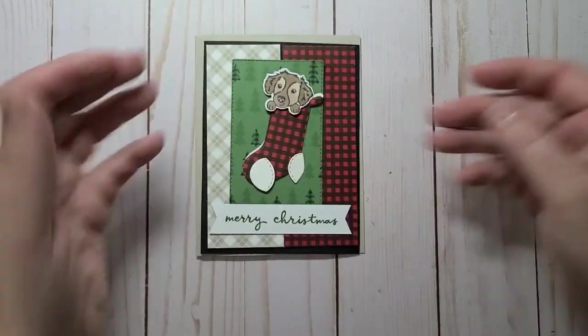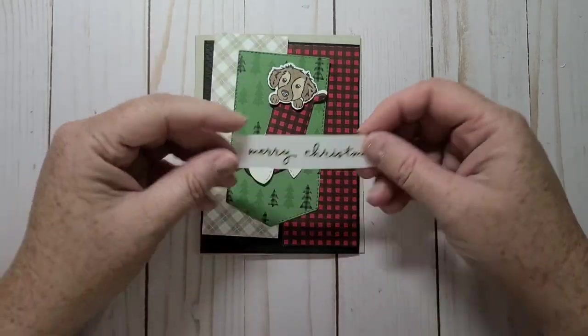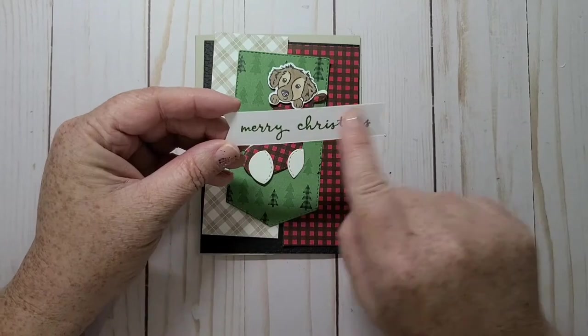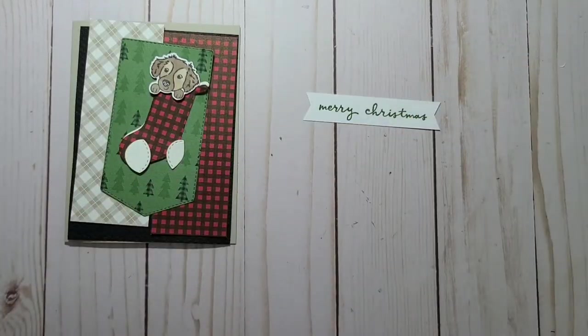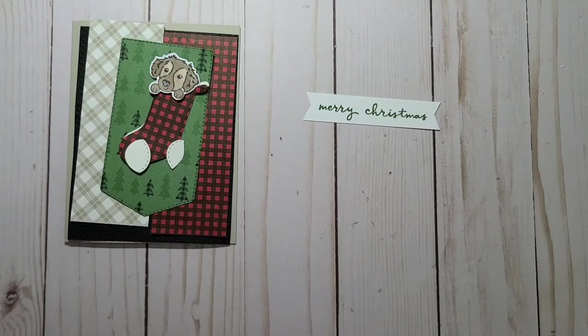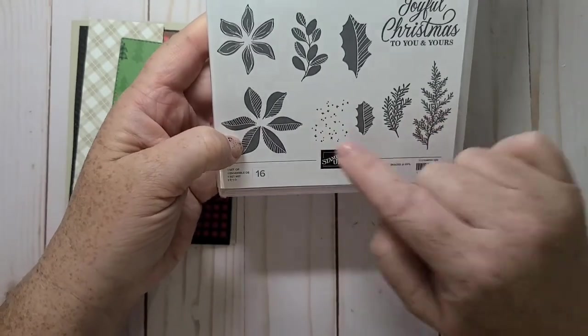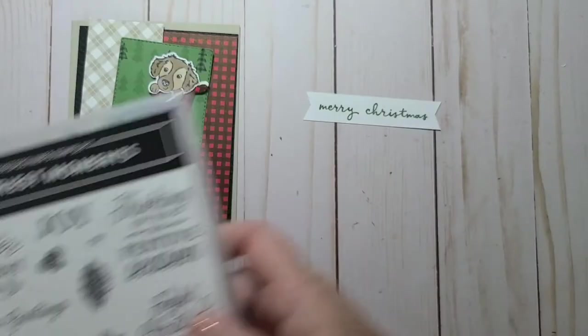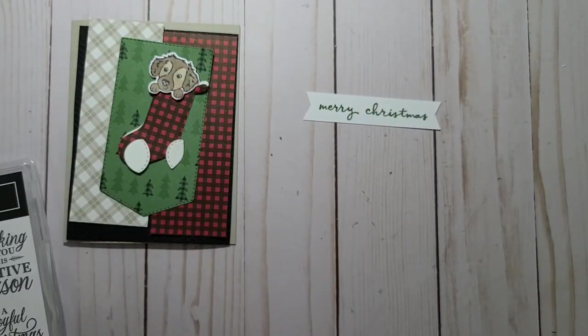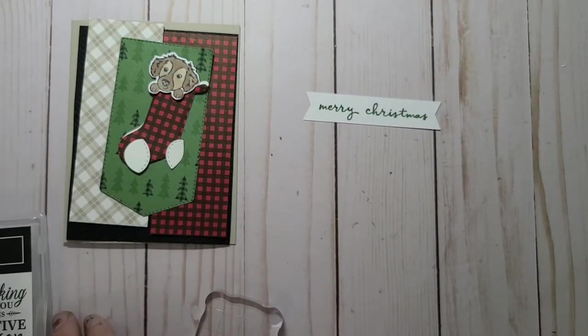So now I pretty much got all my bits together. I'm thinking I might want to do a little something to the sentiment though. Let's see what we have. So we have some little dotage in the Merriest Moments stamps. Maybe I'll just add that to a block.